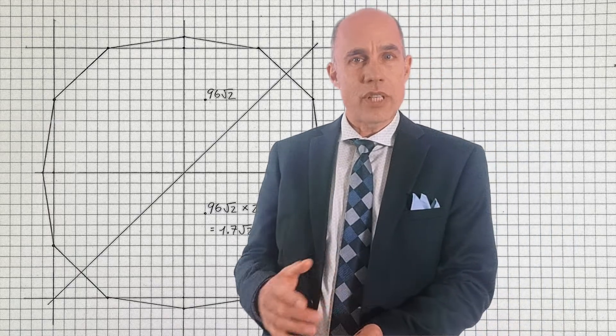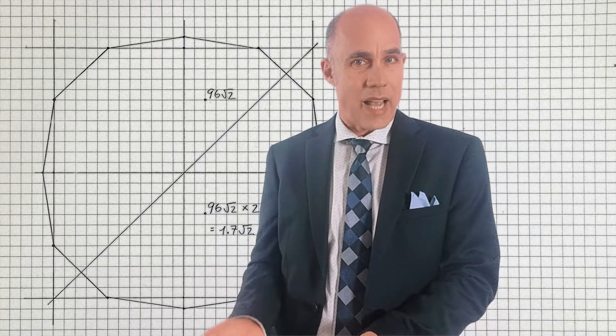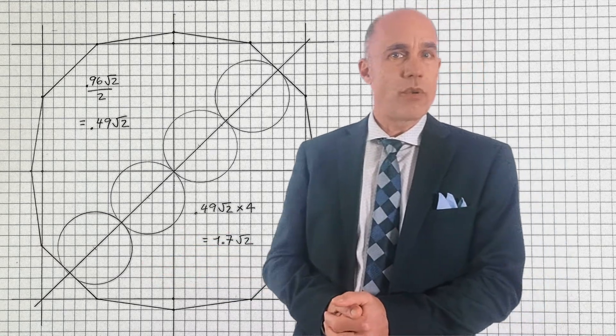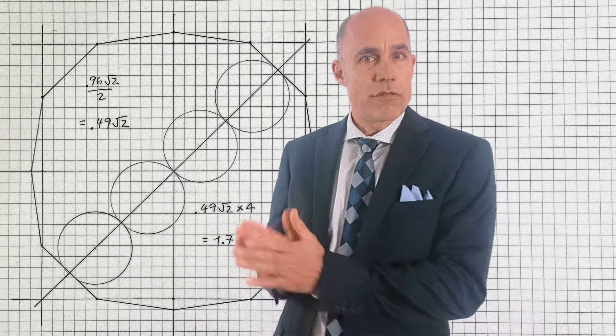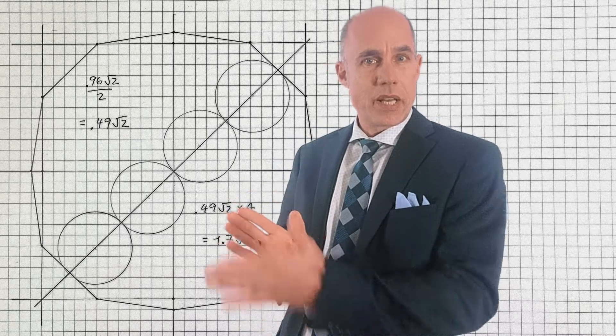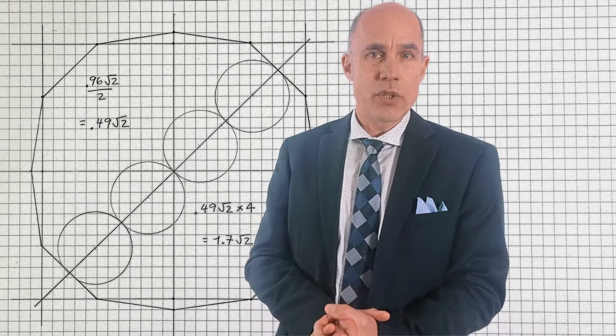So what I want to do now is divide that 0.96 in half. So 0.96 root 2 divided by 2 is 0.49 root 2. We have 4 sections of 0.49 root 2 making up the total length of the inside of the dodecagon.